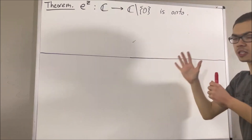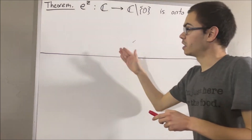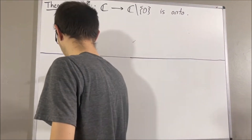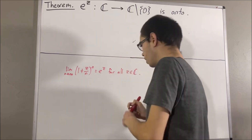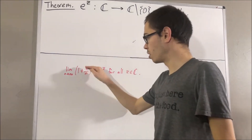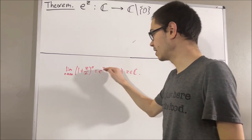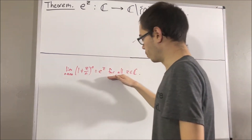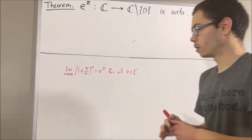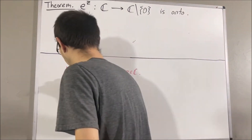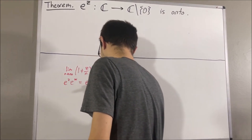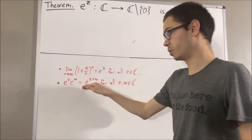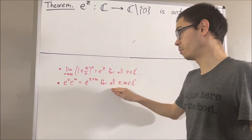Context is going to be important. For us, the complex exponential function is defined as follows: the limit of the sequence (1 + z/n)^n equals e^z for all complex numbers z. From here, we proved many properties of the exponential function, one of which is: e^z times e^w equals e^{z+w} for all complex numbers z and w.